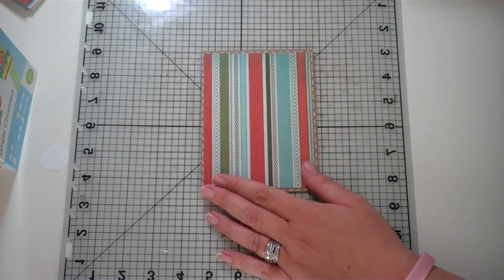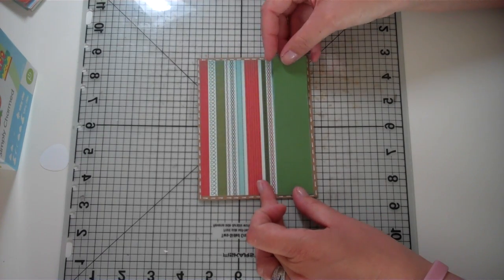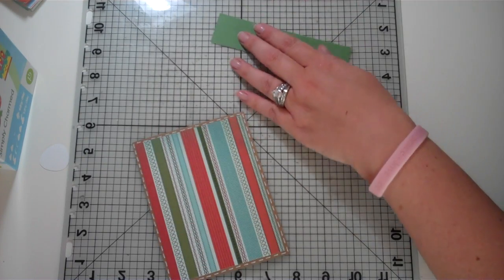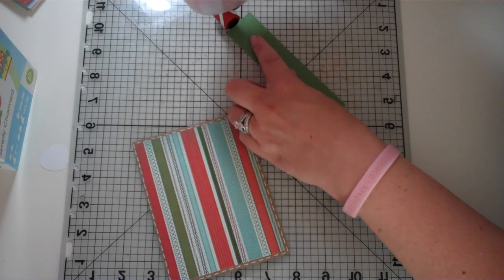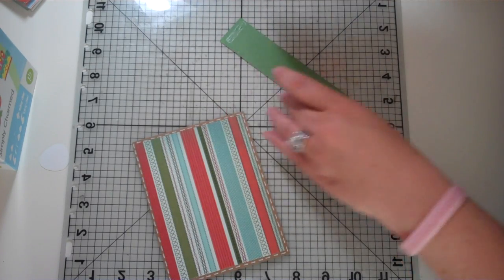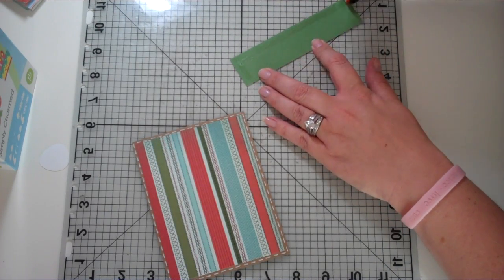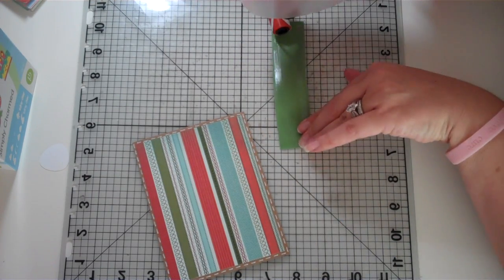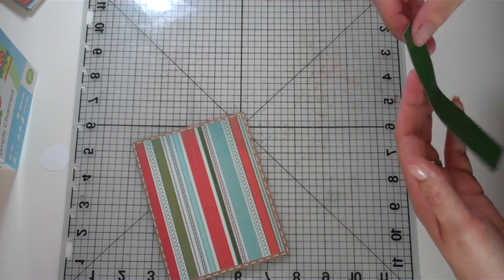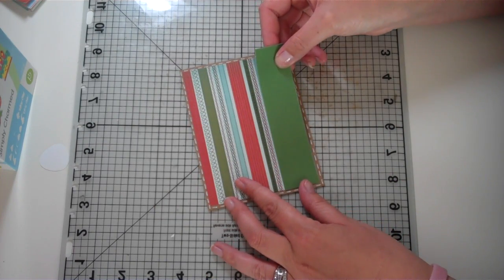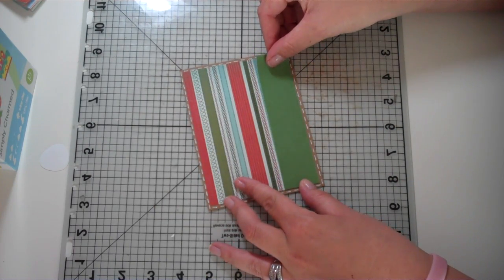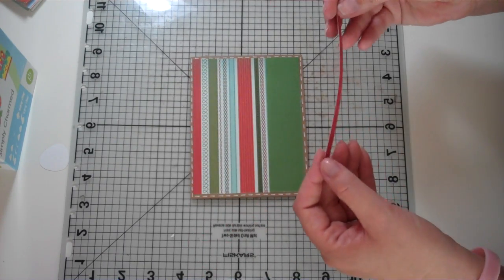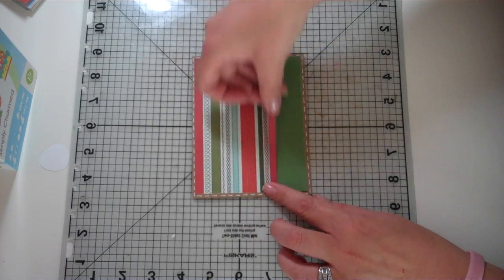Okay, so there's our bottom mat and then this little piece of matching cardstock is about 1 inch by 5 1/4 and we're just going to stick this down at the bottom.